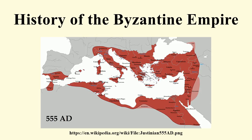The end of the Western Empire is sometimes dated to 476, early in Zeno's reign, when the Germanic-Roman general Odoacer deposed the titular Western Emperor Romulus Augustulus, but declined to replace him with another puppet. To recover Italy, Zeno could only negotiate with the Ostrogoths of Theodoric, who had settled in Moesia. He sent the Gothic king to Italy as Magister Militum per Italiam.